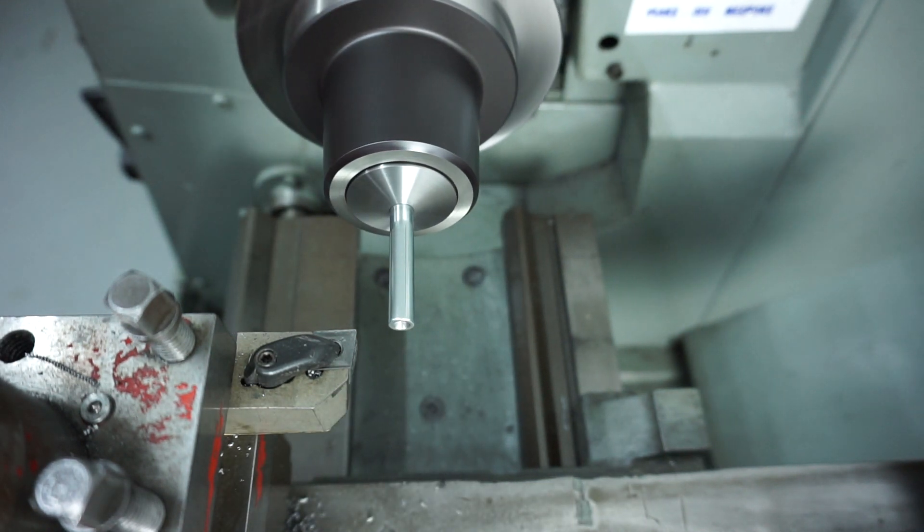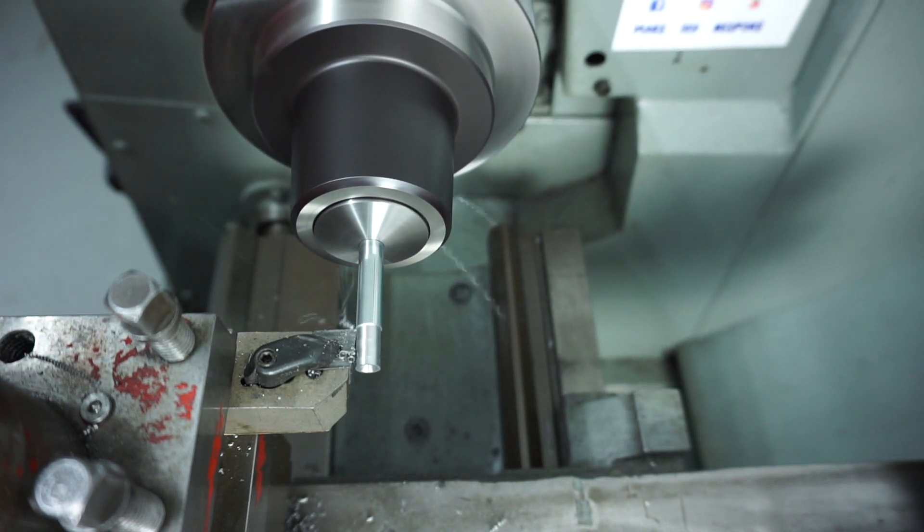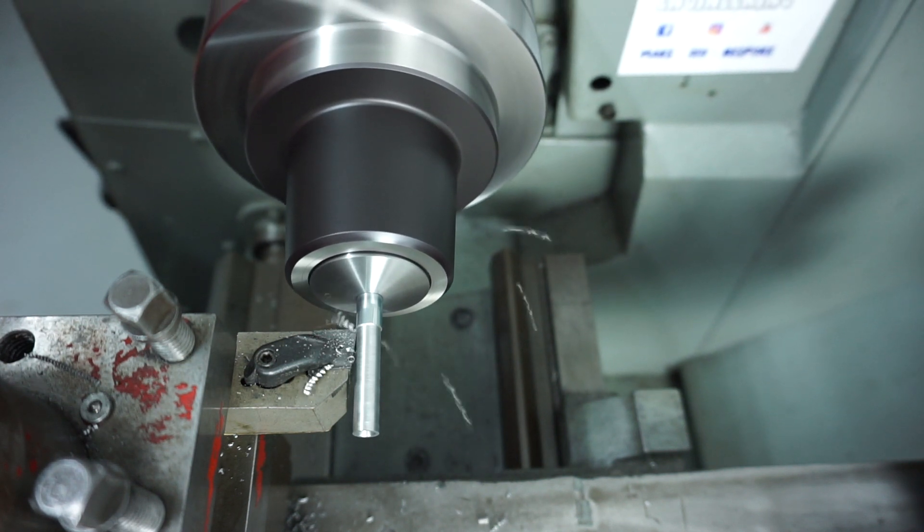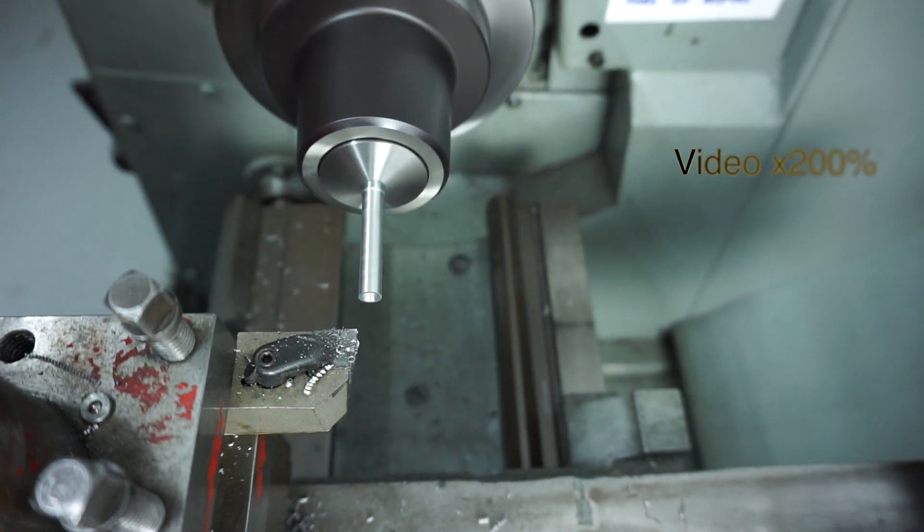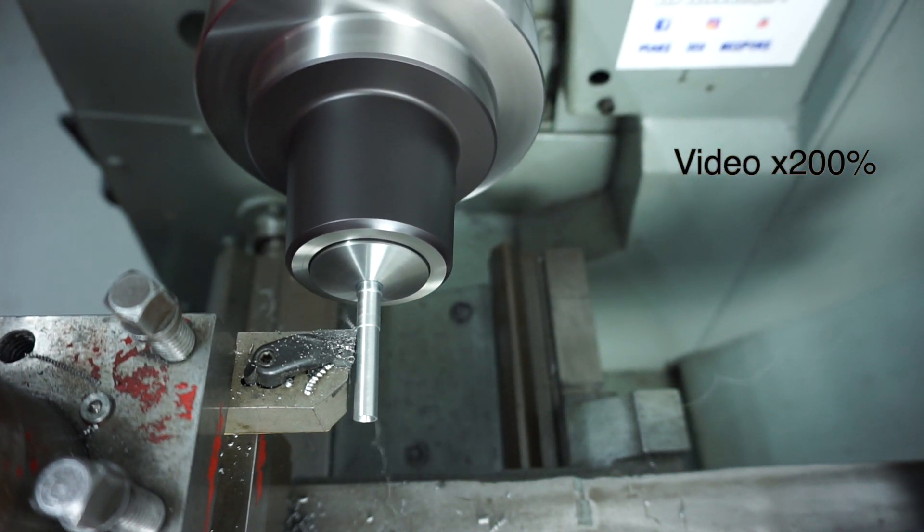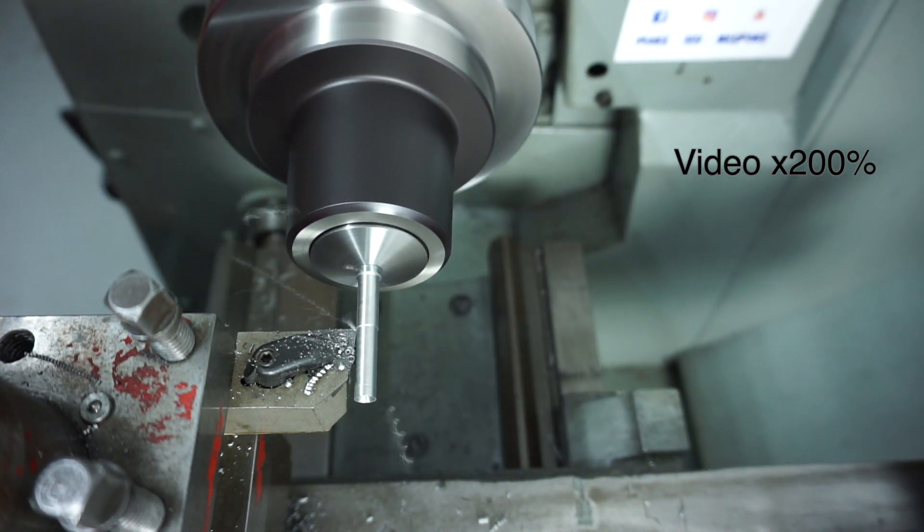This is just some basic roughing out, some parallel turning, getting the bulk of that material off. Just speeding up the footage here so I don't bore you, running it at 200 percent. You can hear my Colchester's pretty flat out. I think I had it up around 2000 RPM for this job and that's just a carbide tip tool that I'm currently using.